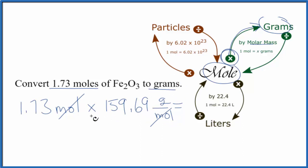So we do the multiplication. We get 276.26 grams of Fe2O3, iron 3 oxide, in 1.73 moles.